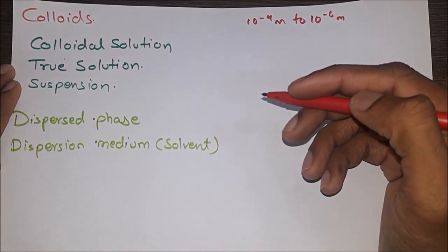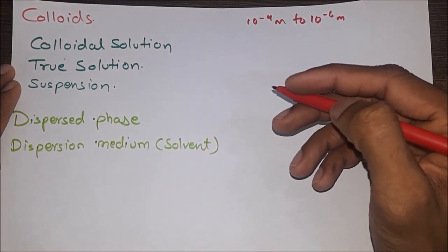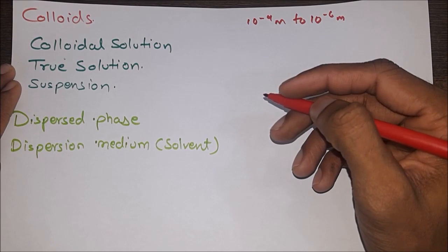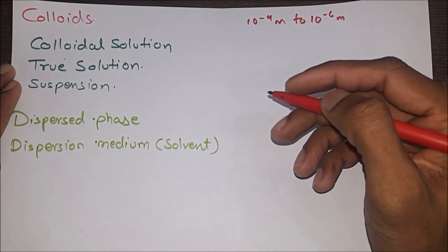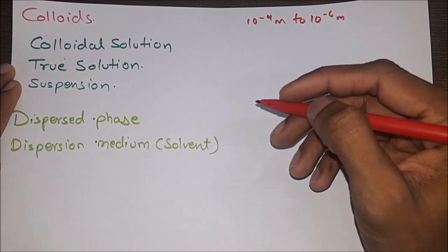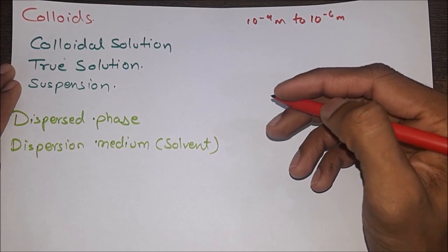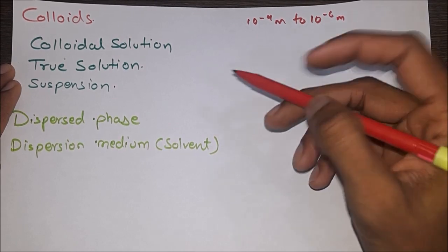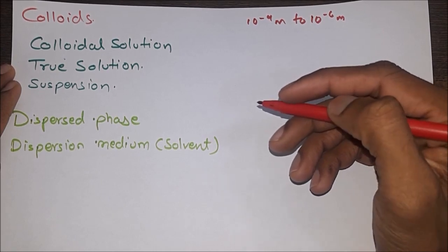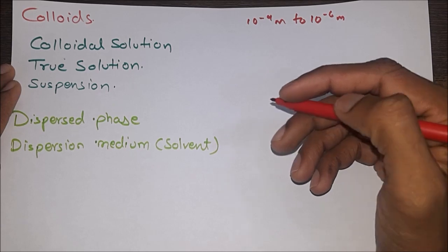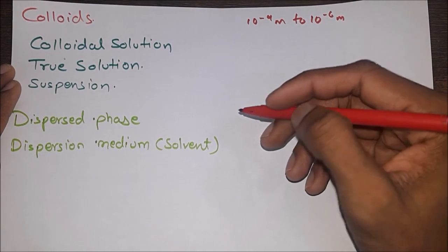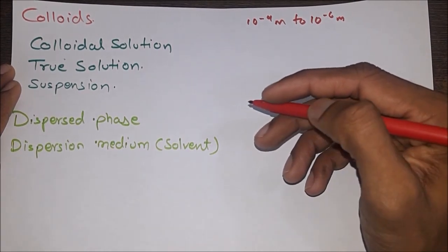True solution: it is a homogeneous mixture whose particle size is less than 10⁻⁹ m. The solution is clear and transparent. Particles may be uncharged molecules or charged ions (both cations and anions). Particles are not visible under an ultra microscope. Example: sodium chloride in water. Suspension: it is a heterogeneous mixture where the size of particles is greater than 10⁻⁶ m. The system is opaque. The particles are molecules which separate out and are visible under a microscope or to the naked eye.